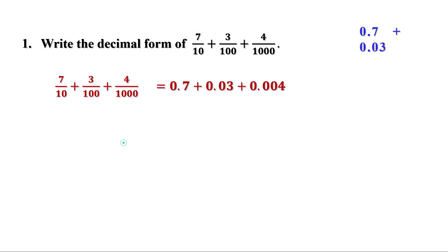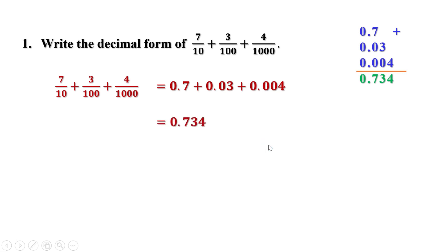Now let us add 0.7 plus 0.03 plus 0.004 together. There are 3 digits after the decimal point, 2 digits, and 1 digit respectively. To make the number of digits after the decimal point equal, you can put zeros — writing it as 0.700 plus 0.030 plus 0.004. So we get 0.734. That is 7 by 10 plus 3 by 100 plus 4 by 1000 is 0.734.